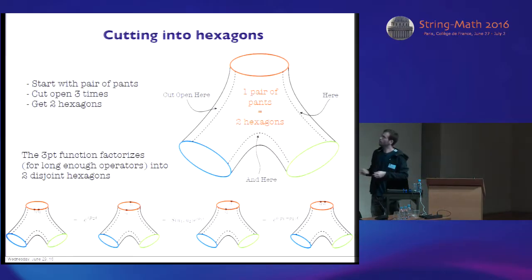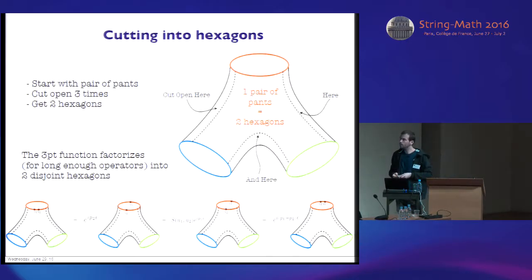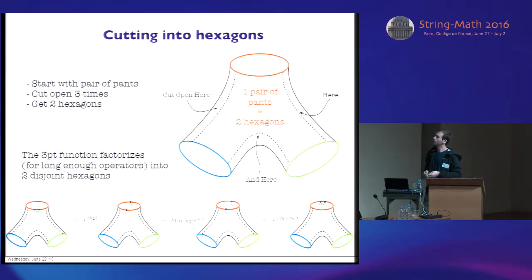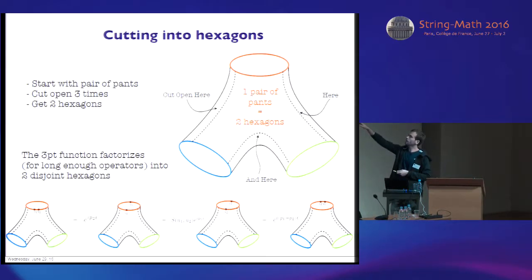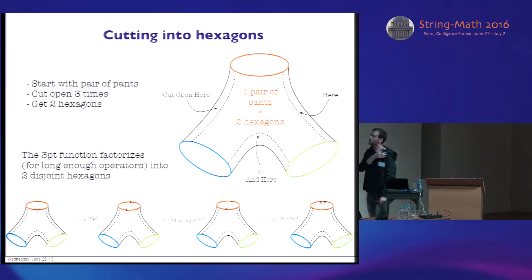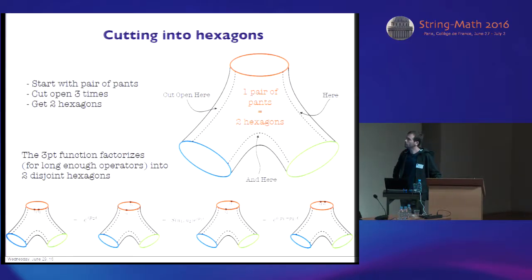So what about finite coupling? If we want to make progress at finite coupling, we must go beyond the Feynman diagram picture because we don't really know how to compute all these diagrams in the end. And if we want to use integrability, we should look for another method — another way of thinking about this object that does not rely on weak coupling intuition too much. So our idea was to open the problem into two, a bit like we were opening up the cylinder before to simplify the dynamics. Here we wanted to do the same for the three-point function and cut it into two.